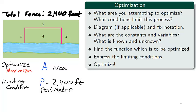In our third step, we ask the question, what are the constants and variables, and what are the knowns and unknowns? The unknowns are the variables x, y, and A, while the perimeter is constant and known to be 2400 feet.